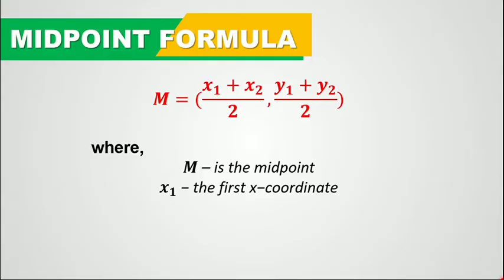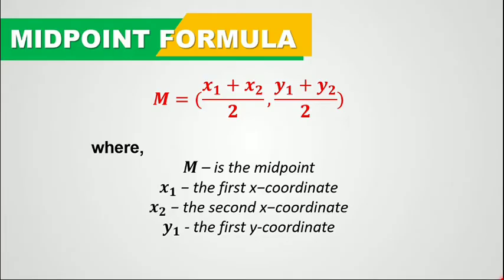Here, x1 is the first x coordinate, x2 is the second x coordinate, y1 is the first y coordinate, and y2 is the second y coordinate.